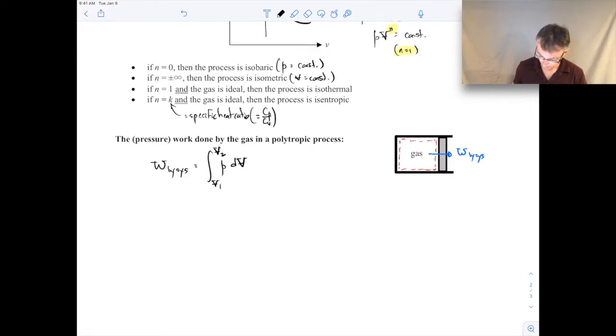So the pressure work done by the system is just PDV work. We can write down our expression for the polytropic process, just kind of rearrange it. Remember P times V to the N is equal to a constant. So that means that P is equal to the constant times V to the minus N, which we can substitute in. That'd be constant times V to the minus N dV. Of course, the constant can come outside the integral.